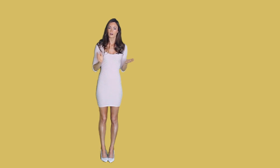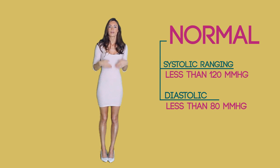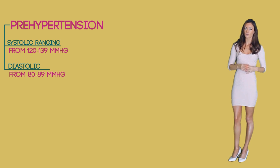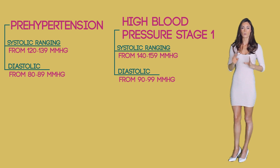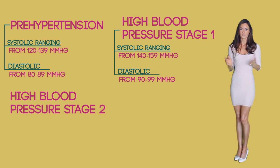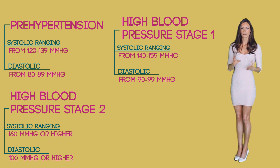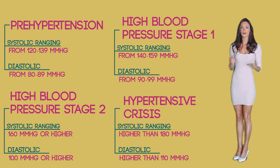The ranges for each are as follows. A normal blood pressure has a systolic less than 120 and a diastolic less than 80. Pre-hypertension has a systolic range from 120 to 139 or a diastolic from 80 to 89. High blood pressure stage one has a systolic from 140 to 159 or a diastolic from 90 to 99. High blood pressure stage two has a systolic of 160 or higher or a diastolic of 100 or higher. A hypertensive crisis has a systolic higher than 180 or a diastolic higher than 110.